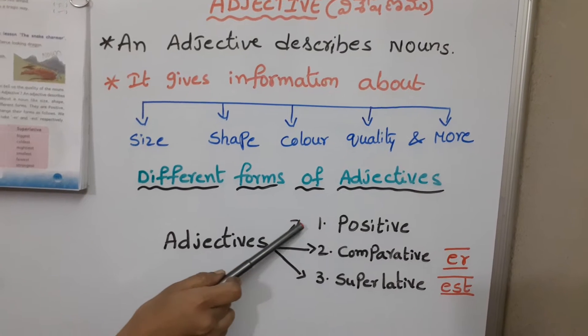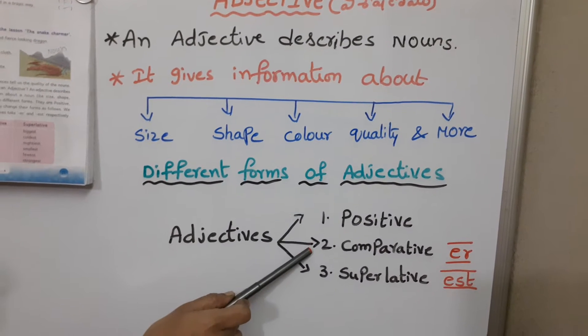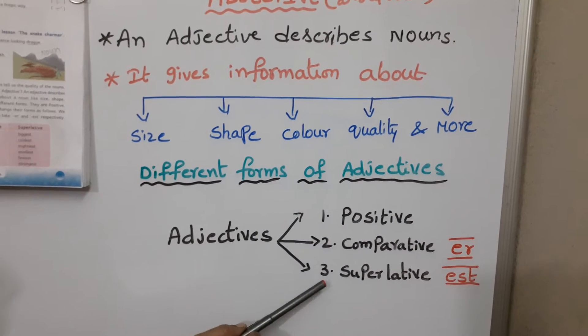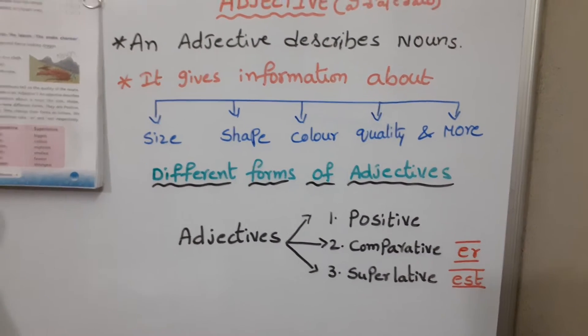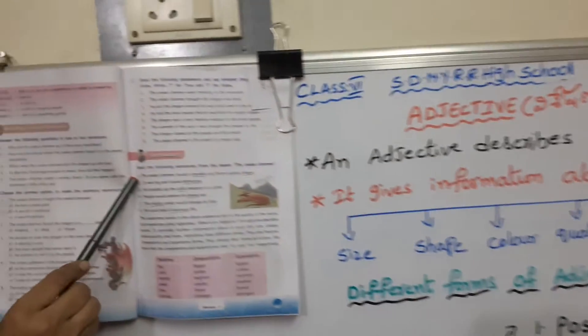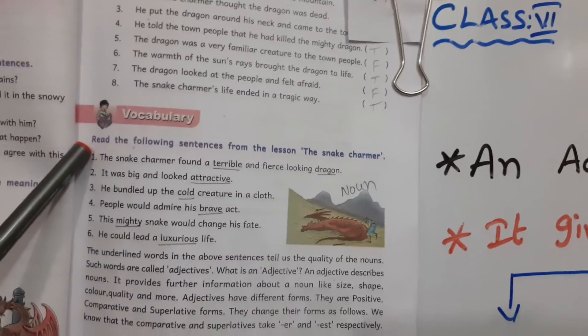The three forms of adjectives are: positive, comparative, and superlative. See the example sentences.